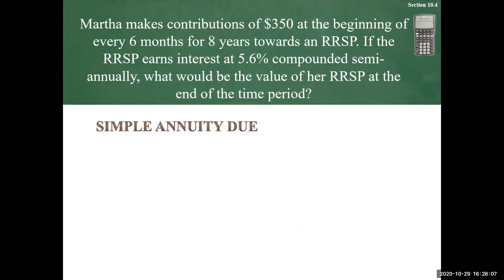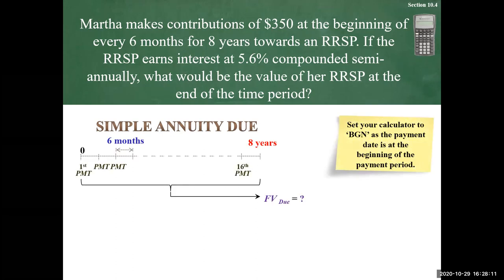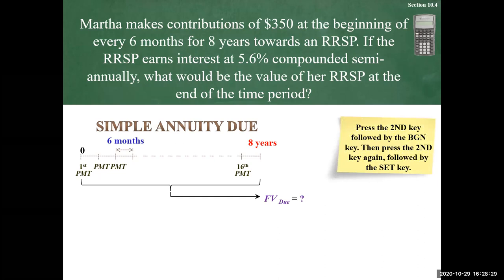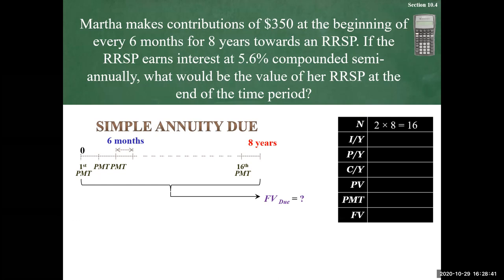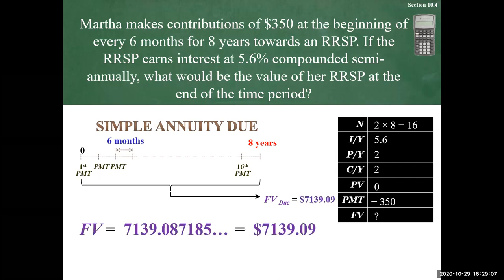Using the Texas BA2 Plus calculator, first set it to BGN — beginning — because payments are at the start of the period, telling the calculator it's an annuity due. Press the second key, followed by the BGN key, then second again, followed by set. Then enter the values: N = 16, nominal rate = 5.6, two payments per year, compounding twice per year, present value = 0, payment = −350 (negative because we're giving money), and compute the future value. You'll get the exact same answer.